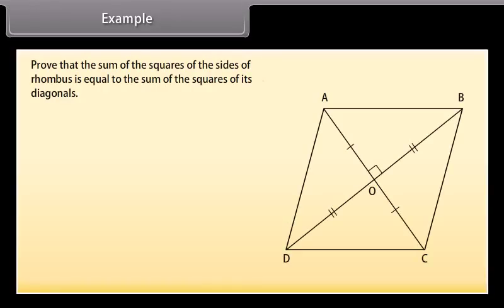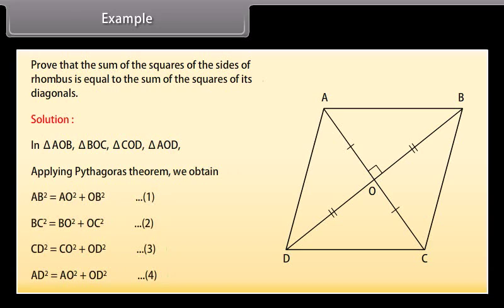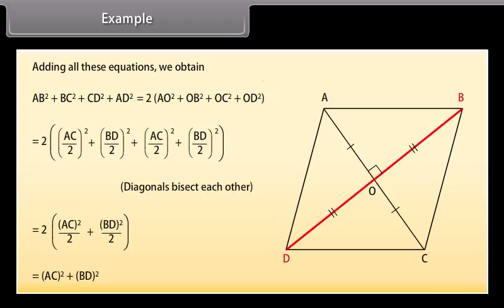Example: Prove that the sum of the squares of the sides of a rhombus is equal to the sum of the squares of its diagonals. Solution: In triangles AOB, BOC, COD, and AOD, applying the Pythagoras theorem, we obtain individual values. By adding all these equations, we obtain AB² + BC² + CD² + AD² = AC² + BD².